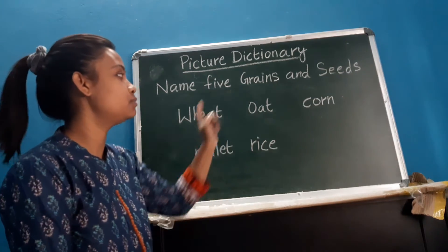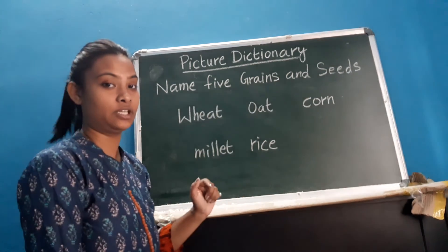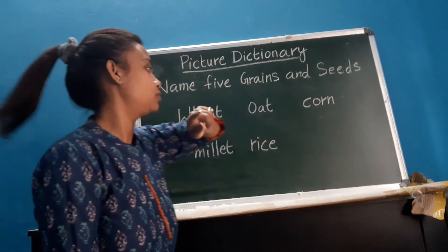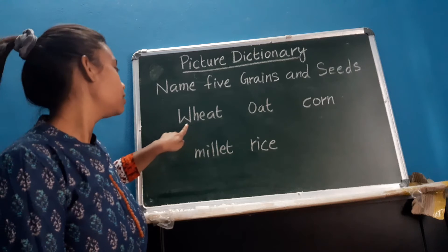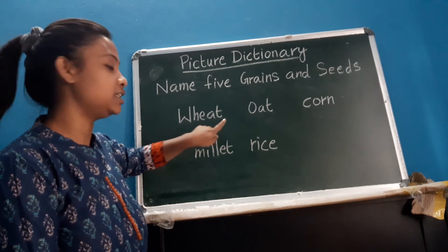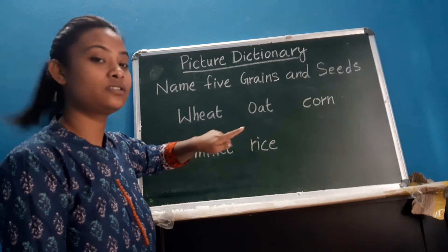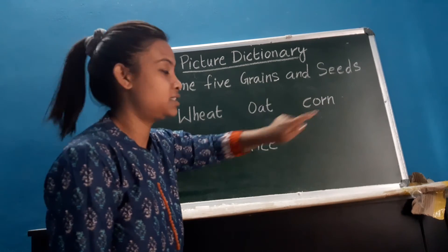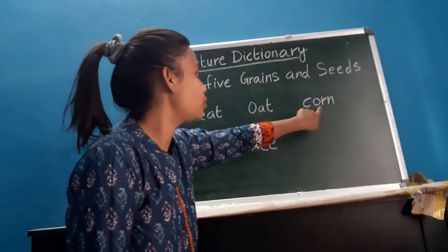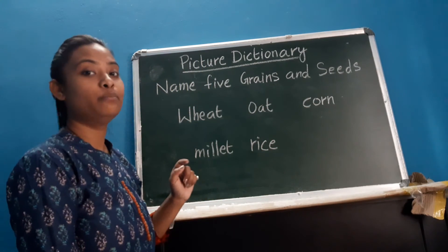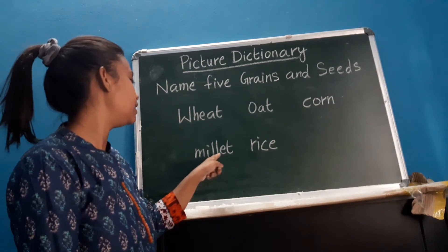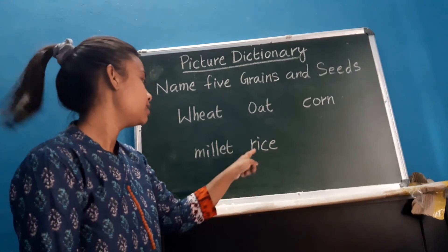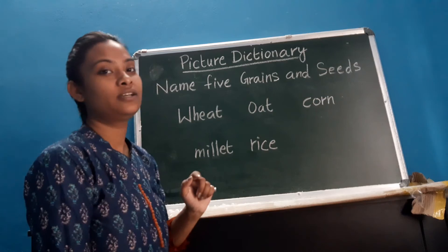So these are the five names of grains and seeds. Let's repeat again. First one is wheat — W-H-E-A-T, wheat. Next is oat — O-A-T, oat. Next is corn — C-O-R-N, corn. Next is millet — M-I-L-L-E-T, millet. And the last one is rice — R-I-C-E, rice.